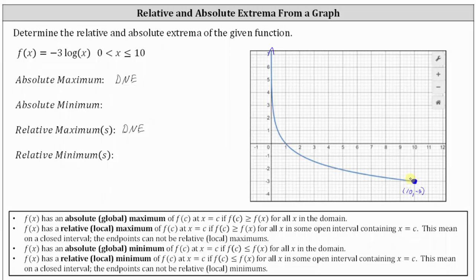f of x has an absolute or global minimum of f of c at x equals c if f of c is less than or equal to f of x for all x in the domain. So notice how the function value of negative 3 is less than or equal to all the other function values, which is why negative 3 is the absolute minimum, which occurs at x equals 10. So we list negative 3 as the absolute minimum.